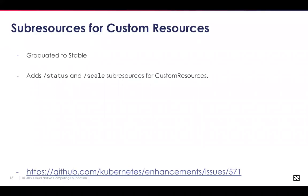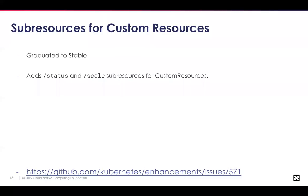Sub-resources for custom resources is also graduating to stable. This is one of the most requested features — it adds a /status and /scale sub-resource for custom resources. If the status sub-resource is enabled, the main endpoint will ignore all changes in the status sub-path if the spec does not change. For the scale behavior, the number of custom resources can easily scale up or down depending on the replicas field set in the spec sub-path.